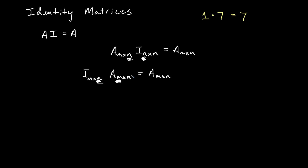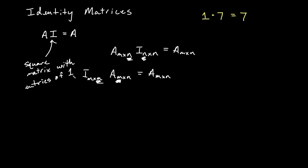These are going to be really easy though — super easy to remember. The size of the identity matrix does depend on the size of A, so when we talk about matrix A times an identity, we generally assume we'll be using the appropriate size. An identity matrix is going to be a square matrix, and it's going to have entries of one on the main diagonal — the top left to bottom right diagonal — and zeros everywhere else.